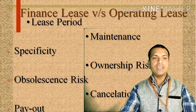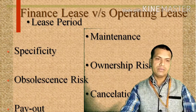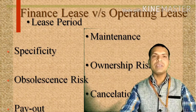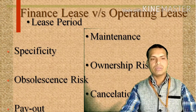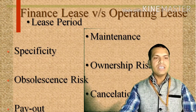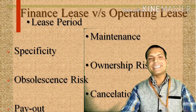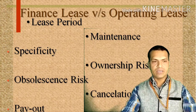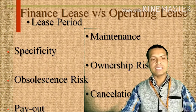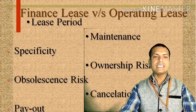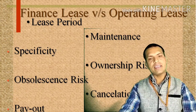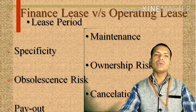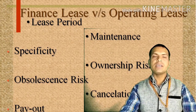Regarding cancellation: a financial lease cannot be cancelled because it is a long-term lease, whereas an operating lease can be cancelled. Regarding payout: in a financial lease, it is a fully payout lease where a single lessee repays the cost of the asset with interest. Whereas in an operating lease, it is a non-payout lease as the lessor is in the business of leasing the asset to various users at several times.